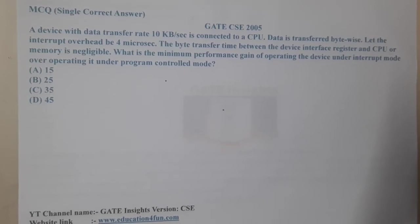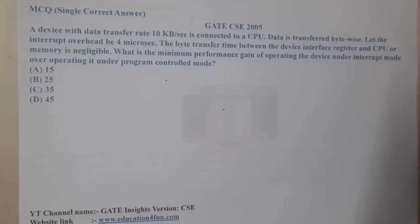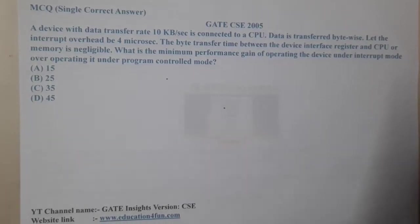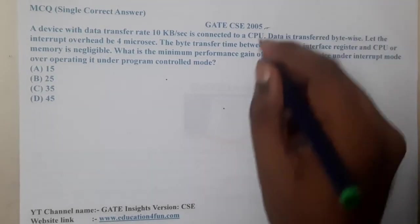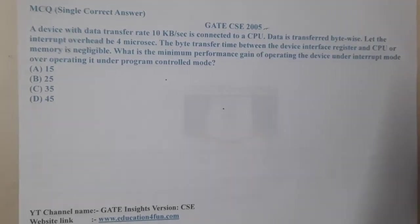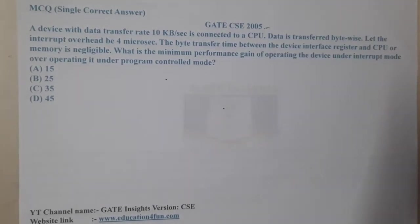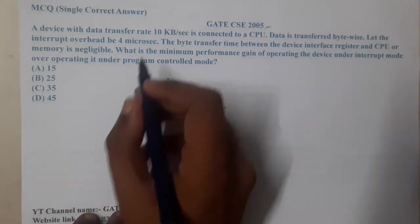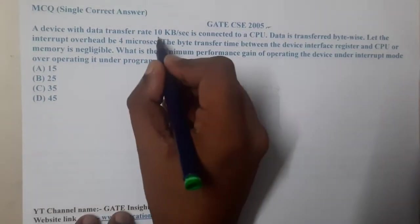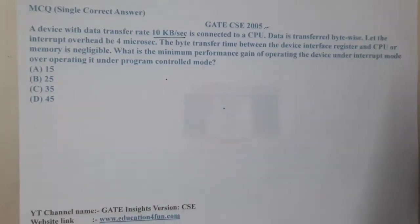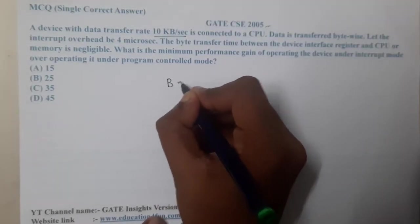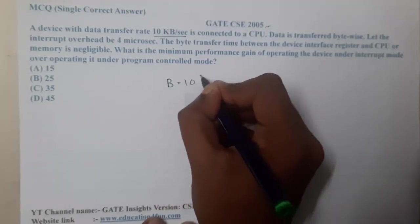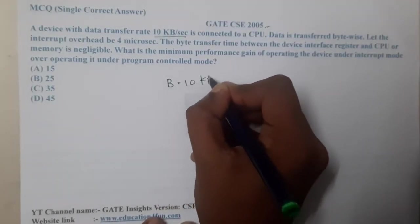Hello guys, we are back with our next lecture. This question belongs to GATE CSE 2015. A device with a data transfer rate of 10 kilobytes per second — so the bandwidth is 10 KB per second.